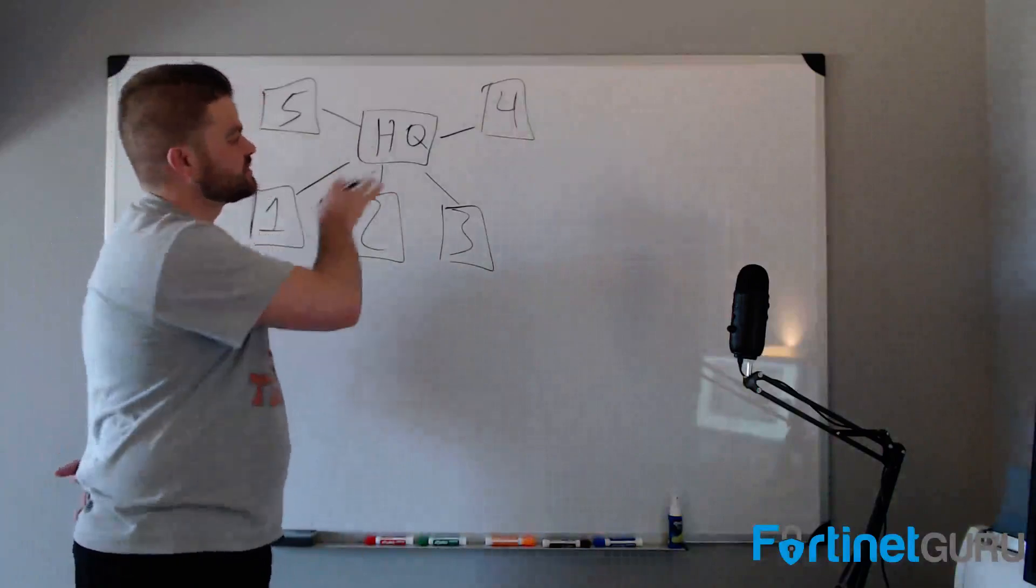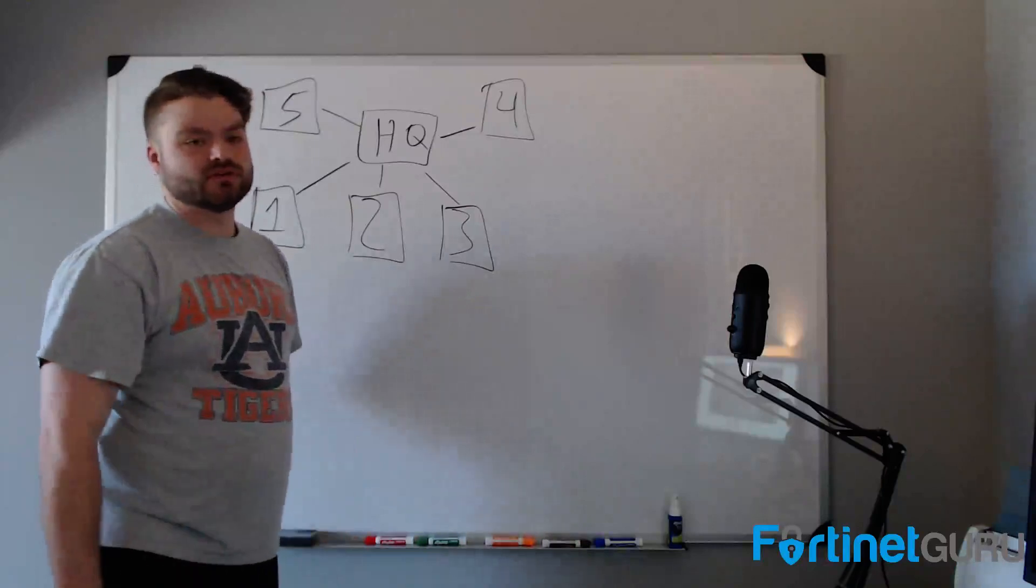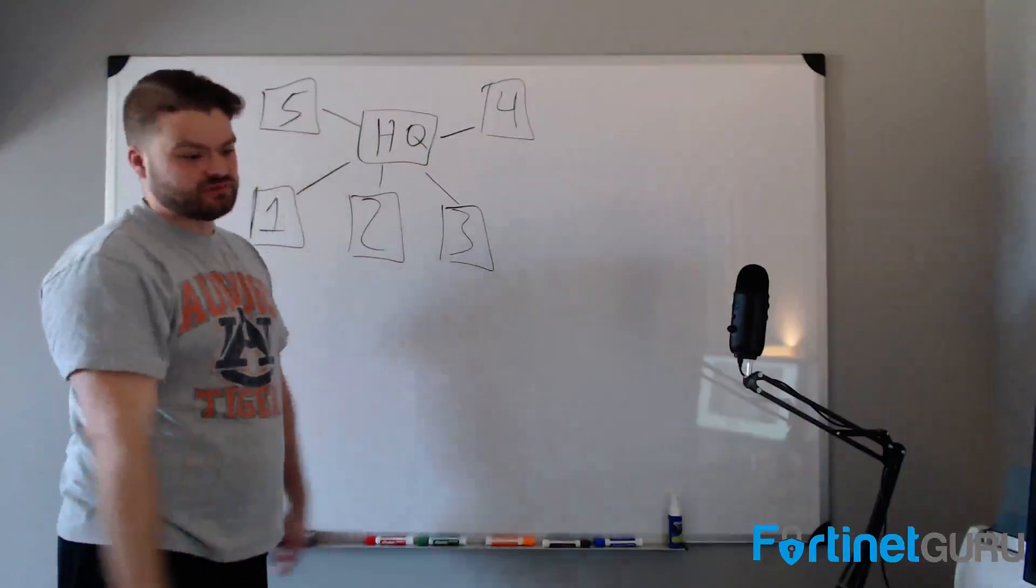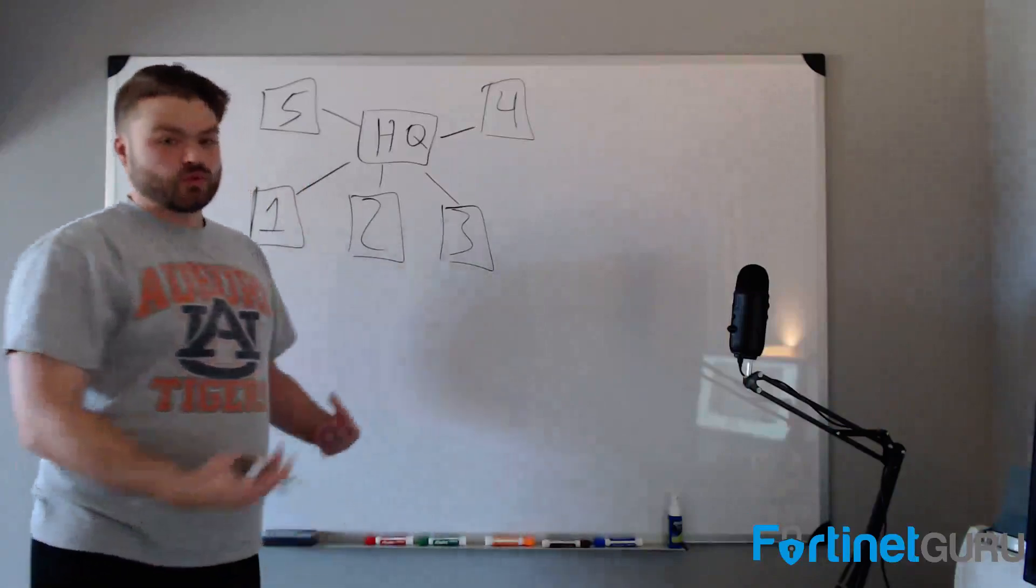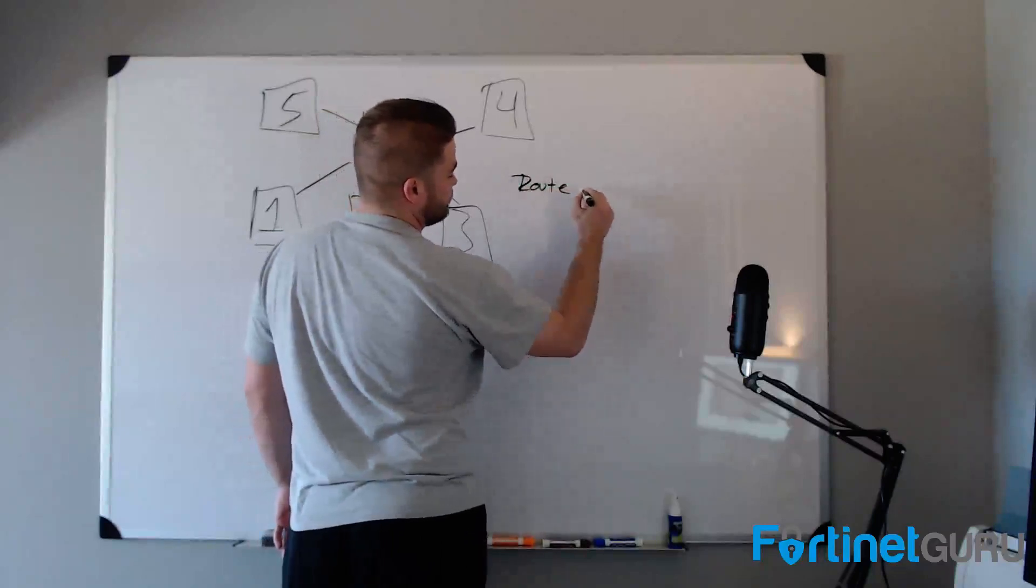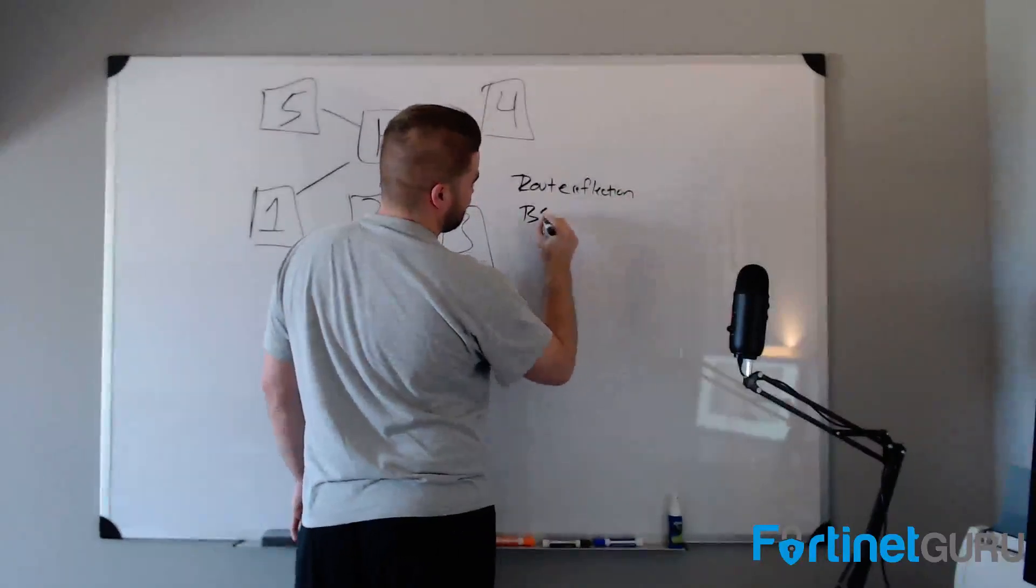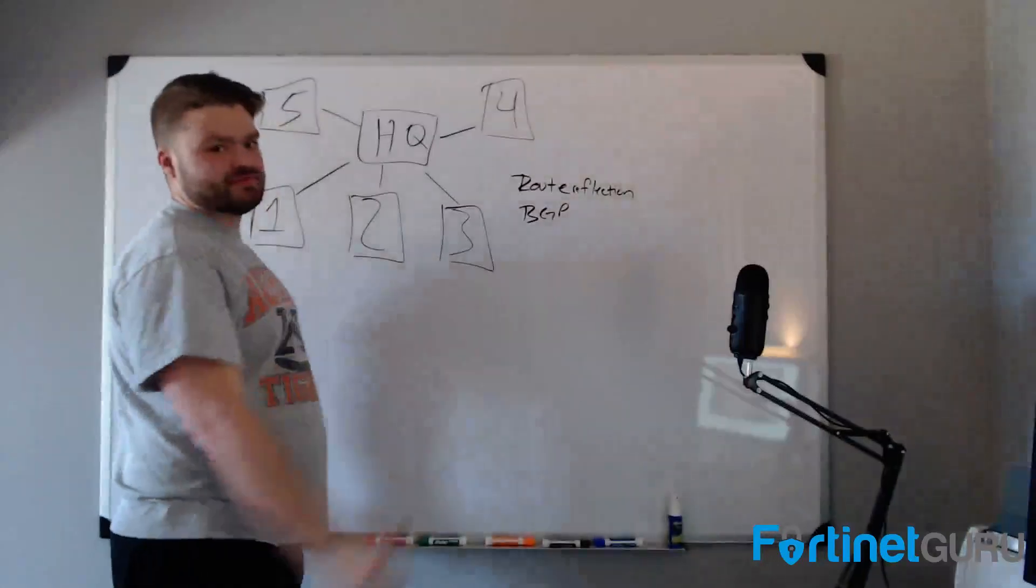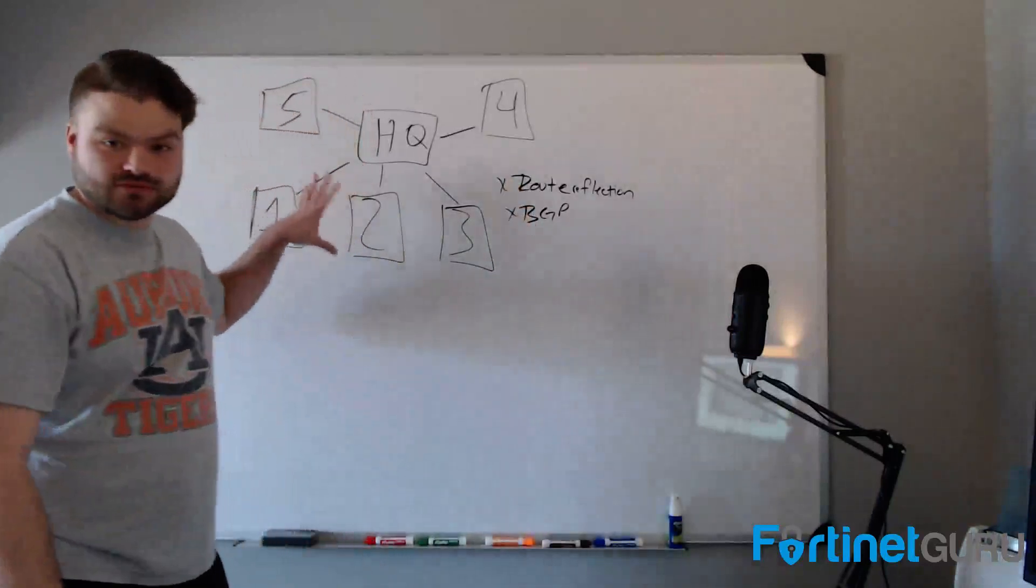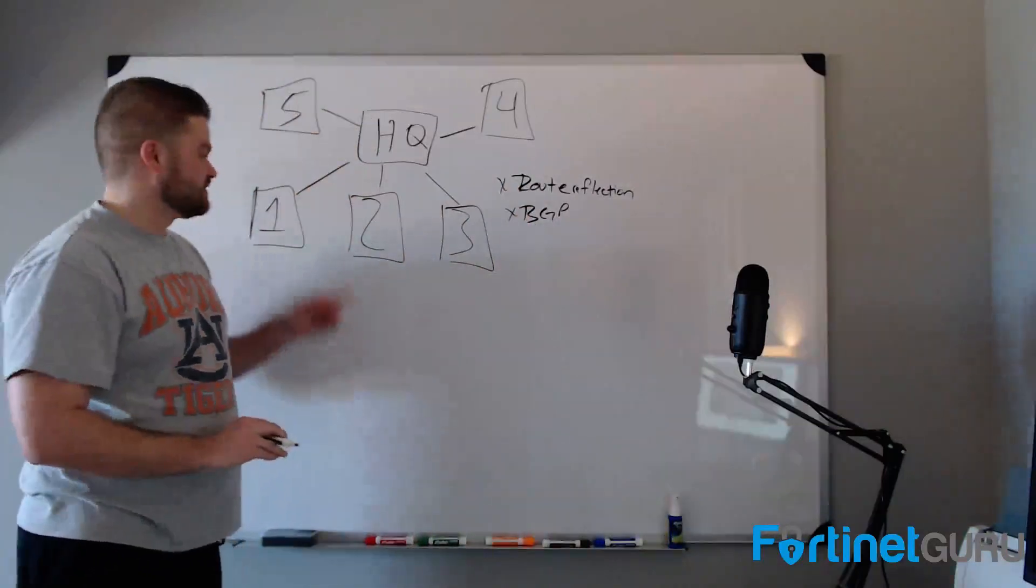So you have the simplicity of a single tunnel from a management standpoint. You don't have to worry about one having a site to two, three, four, or a site to site from one to two to three to four to five to HQ and all that. So it greatly reduces your management overhead. With route reflection, which is a feature that you actually turn on within the tunnel, with route reflection, BGP, you're able to take this simple IPsec layout and dynamically build site to site tunnels from location to location.